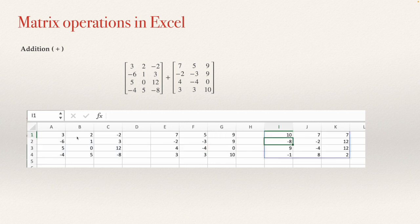You can see that 3 plus 7 is 10, that 2 plus 5 is 7, that negative 2 plus 9 is 7, and so on. You can see the answer immediately. The subtraction will be similar, using the minus sign.